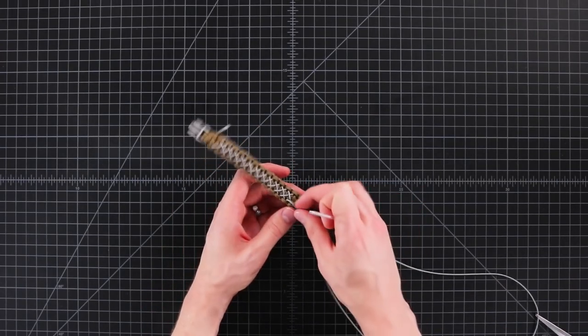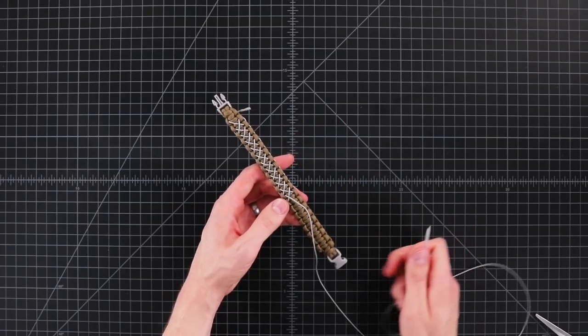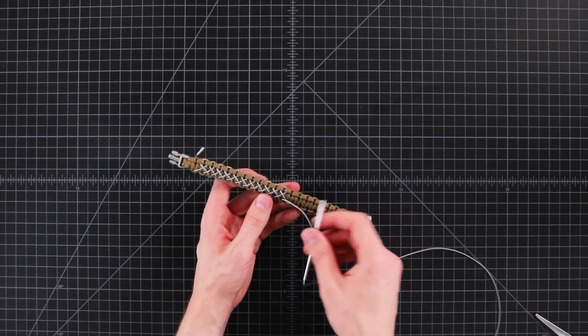So we're about halfway, a little over now. You can see this nice criss-cross pattern developing. I'm just continuing on.